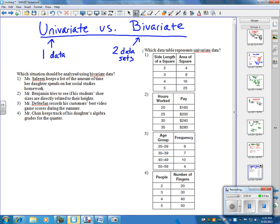So, for the first question over here, which one will give us bivariate data? We want two sets. Now, if you look at answer one, it says Ms. Saleem keeps a list of amounts of time her daughter spends on her social studies homework. This is only one type because all it's mentioned is time. That's the only measurable amount. So it can't be one.